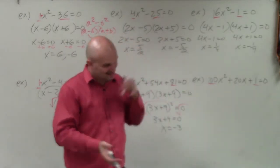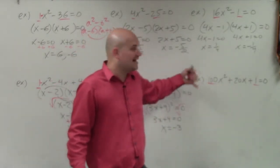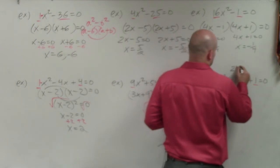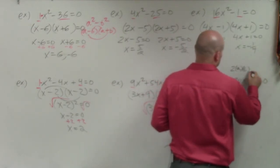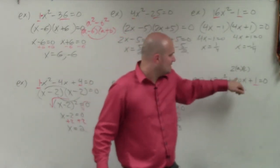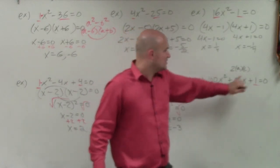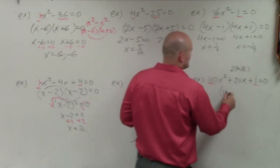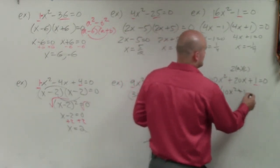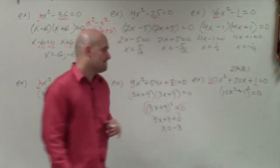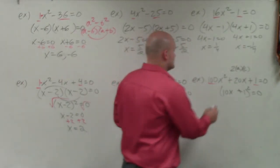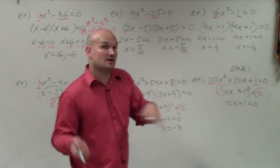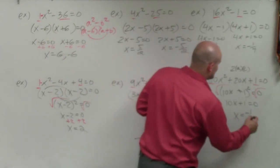In this example, you should start to see the pattern. The middle term is always going to be 2 times a times c — if the first term is a squared and the last is c squared. The square root of 100 is 10, the square root of 1 is 1, and 2 times 10 times 1 is 20, so this is a perfect square trinomial. Therefore it becomes (10x plus 1) squared equals 0. Taking the square root on both sides gives 10x plus 1 equals 0. Subtracting 1 and dividing by 10 gives x equals negative 1/10.